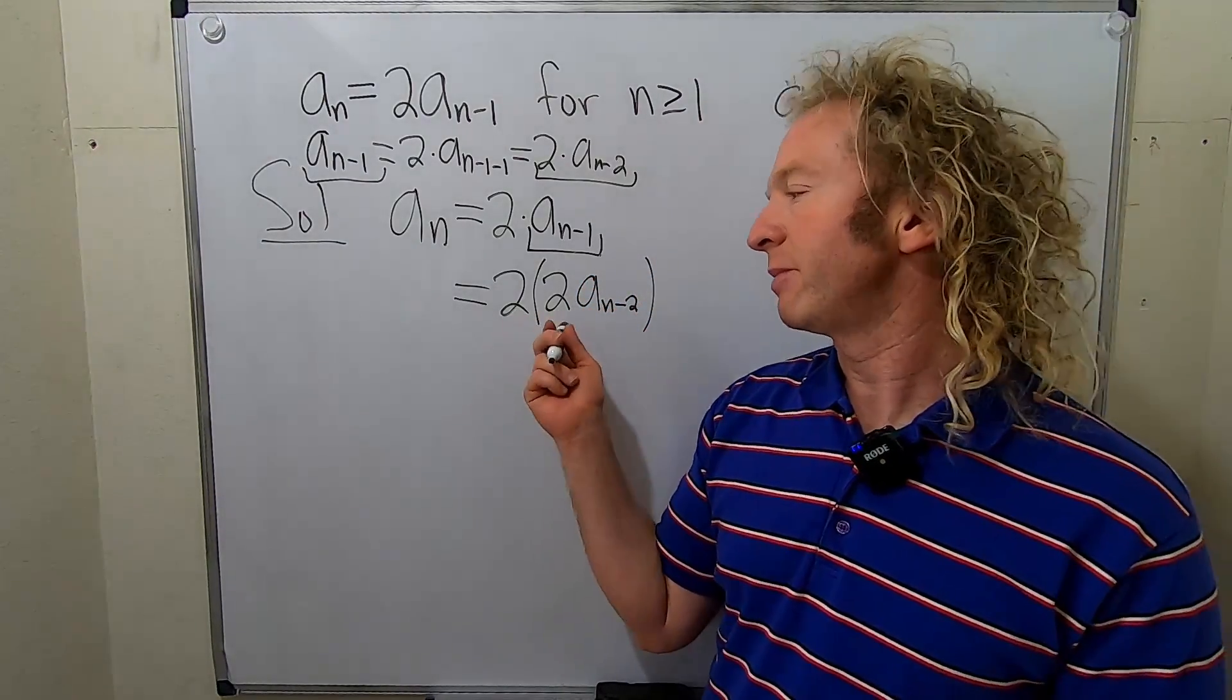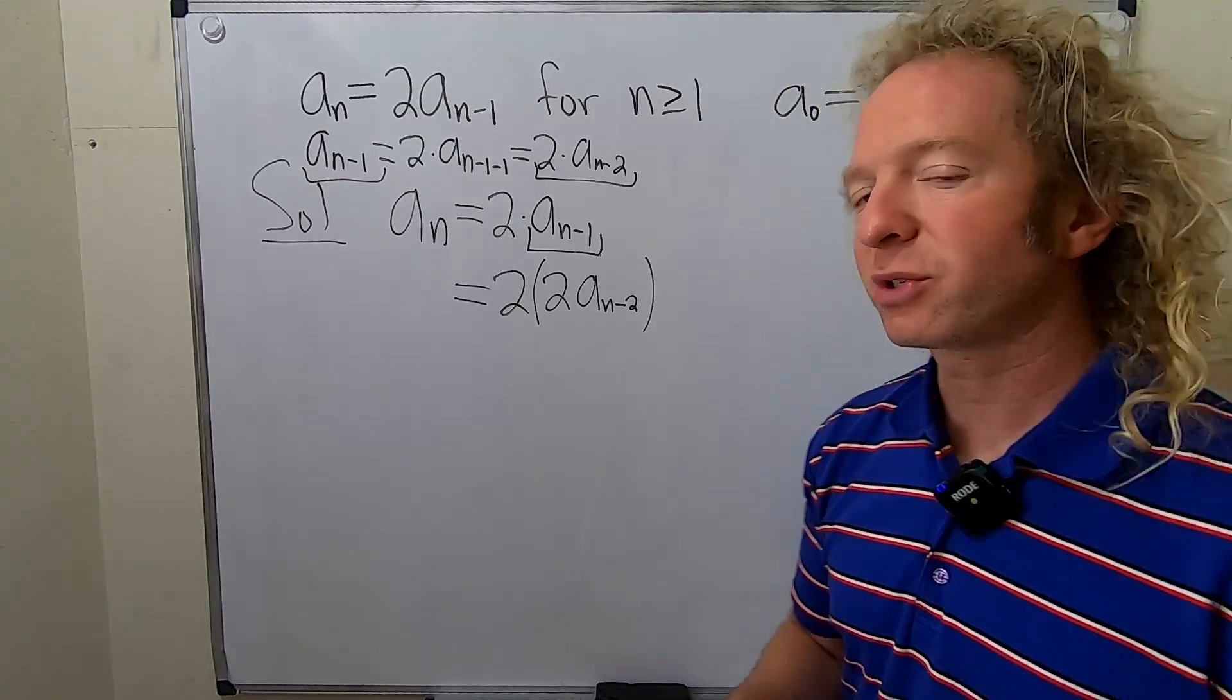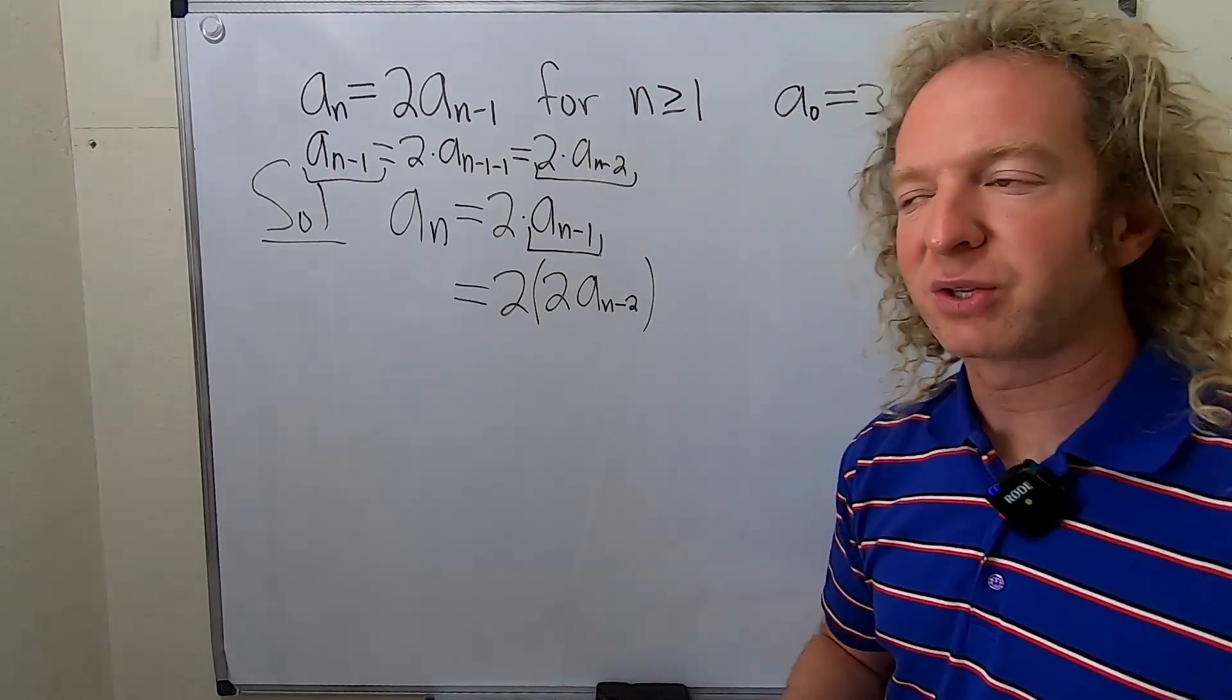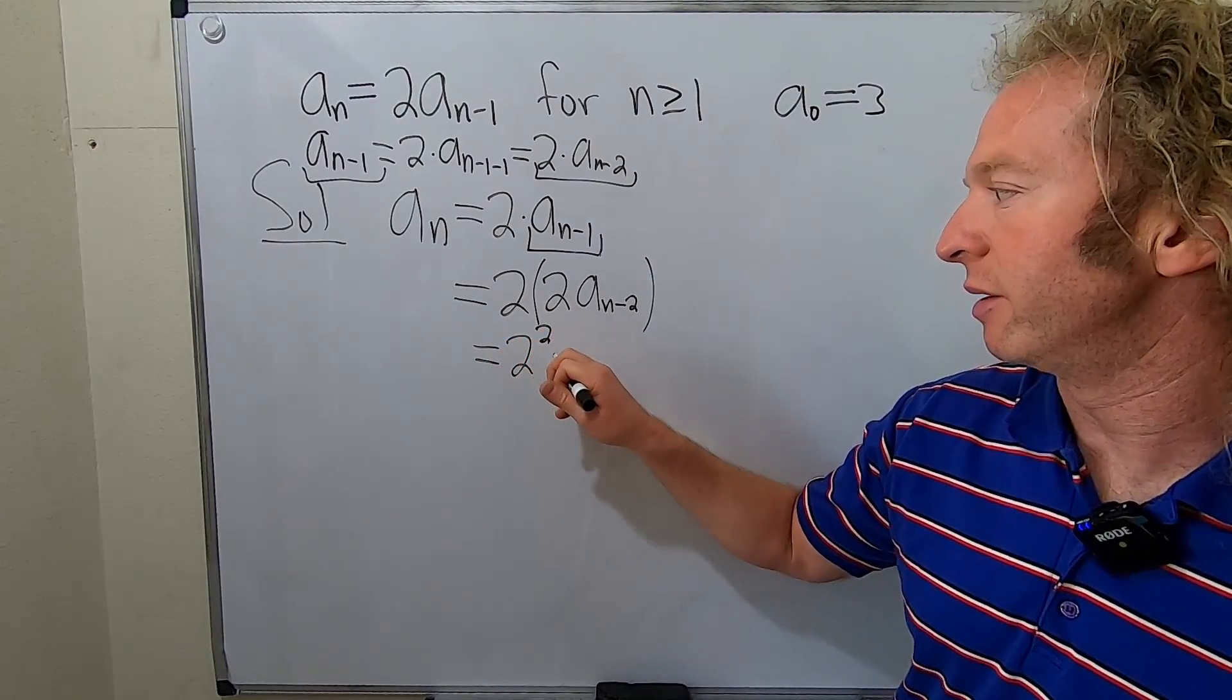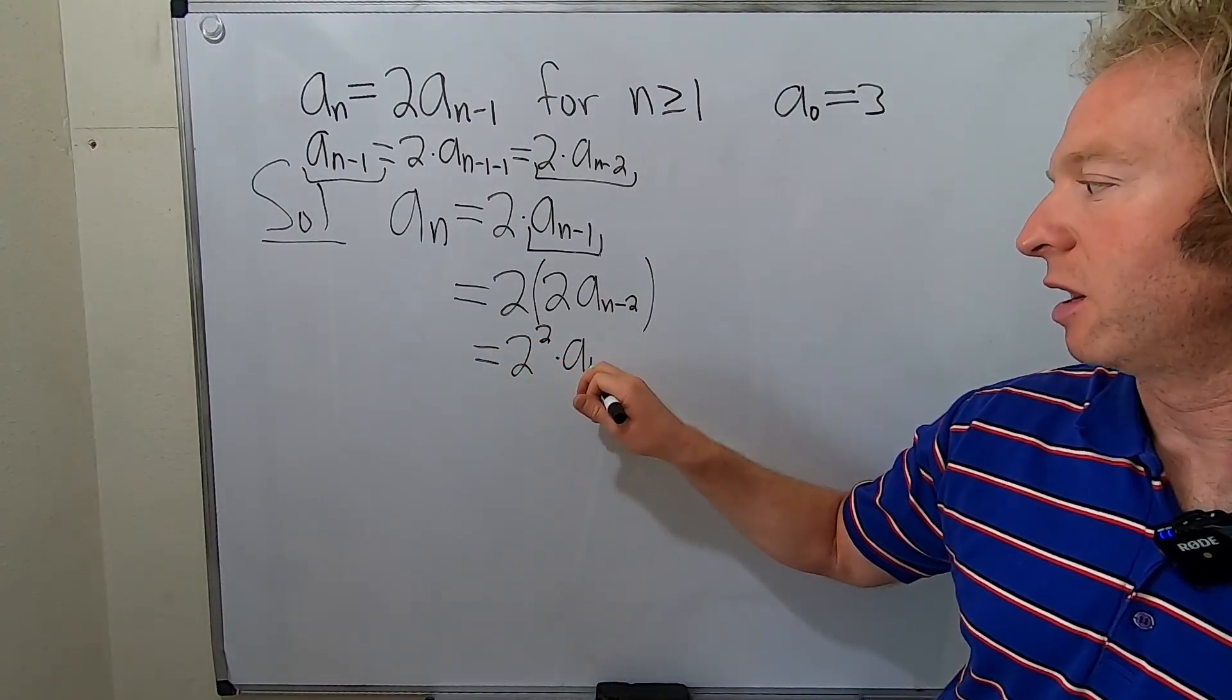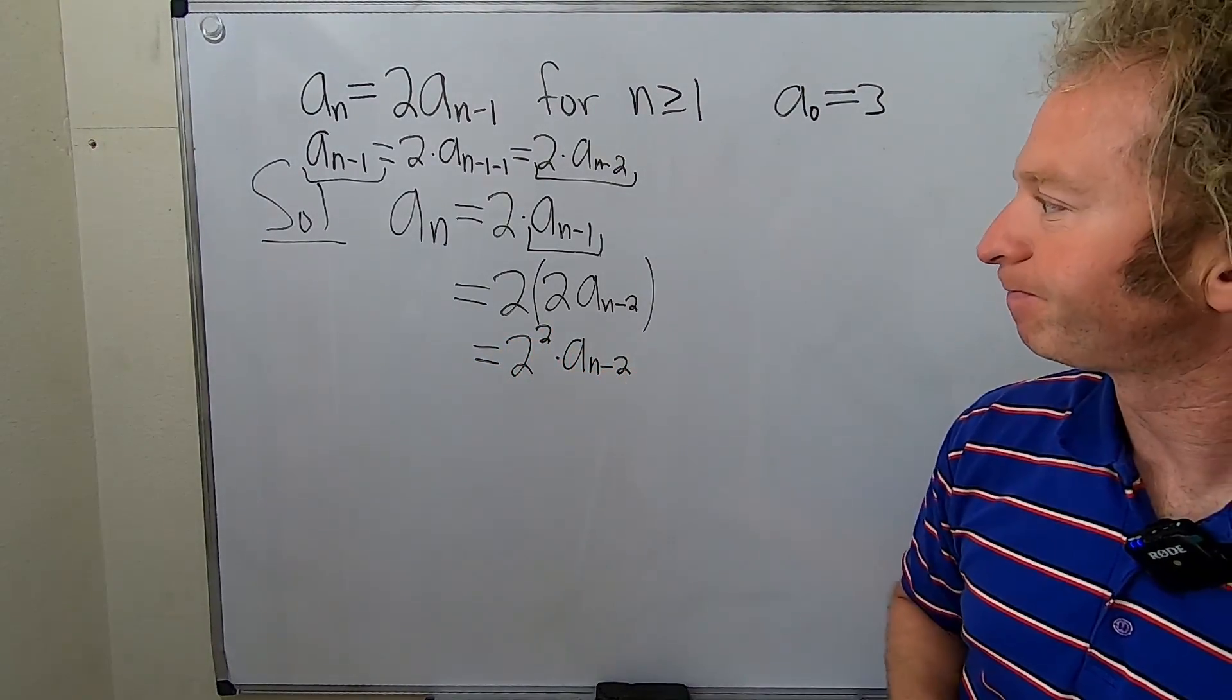And then notice 2 times 2 is 4, but we don't want to write it that way. We want to write it in a way that's going to lead us to a pattern. So we write it as 2 squared times a_{n-2}.